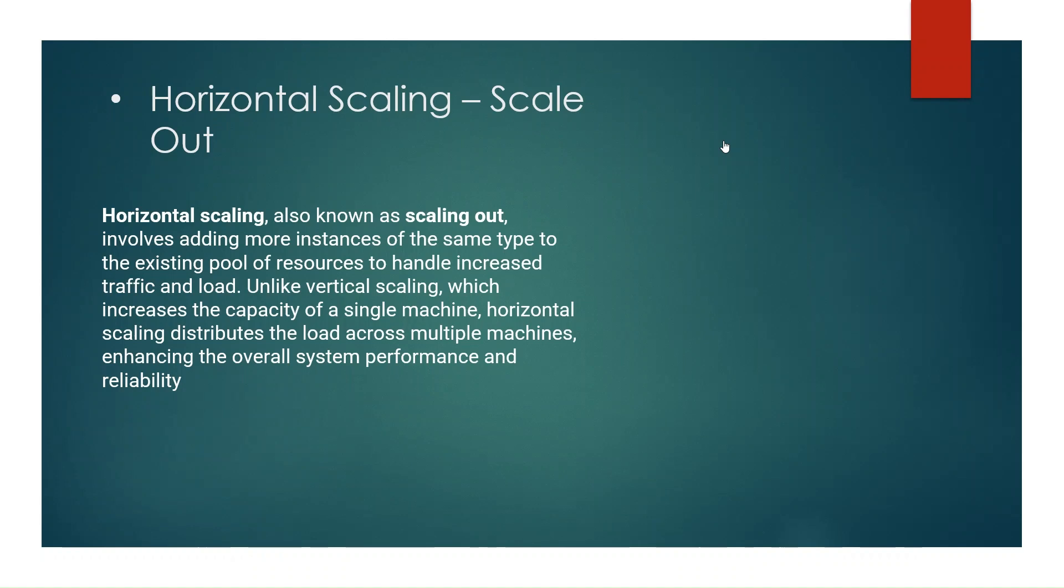Horizontal scaling, also known as scaling out, involves adding more instances of the same type to the existing pool of resources to handle increased traffic and load. Unlike vertical scaling which increases the capacity of a single machine, horizontal scaling distributes the load across multiple machines, enhancing overall system performance and reliability.